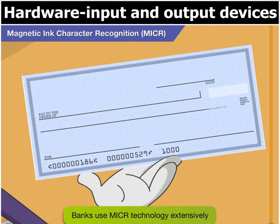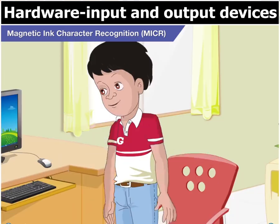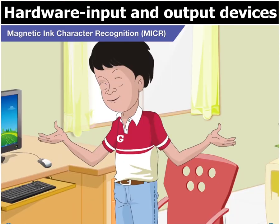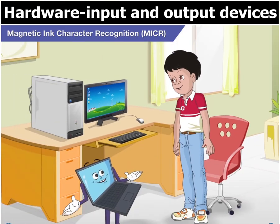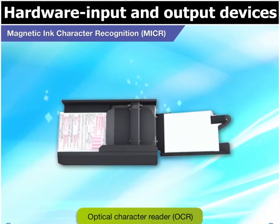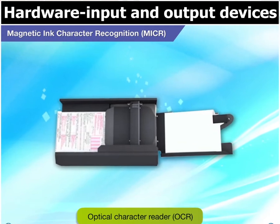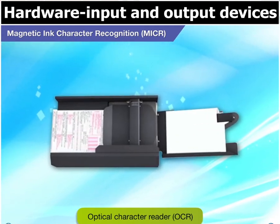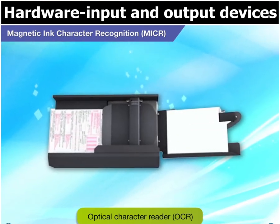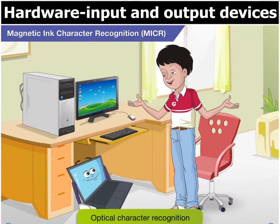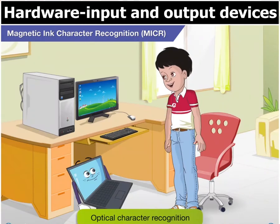Do you know how the amount written in ordinary ink on this check is read? For that, we use a device called an Optical Character Reader and this process is called Optical Character Recognition. My teacher told me. That's right, Goggle.